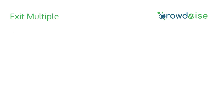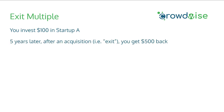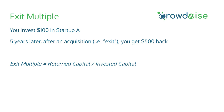Let's get into an example starting with an exit multiple. Assume you invest $100 in startup A. Five years later, after an acquisition — or an exit as we call it in the industry — you get $500 returned back to you. The equation for exit multiple is returned capital divided by invested capital. So in this case, the exit multiple is 500 divided by 100, which is 5x.